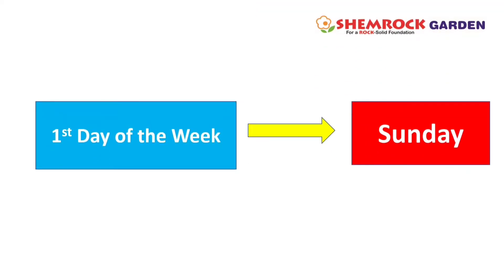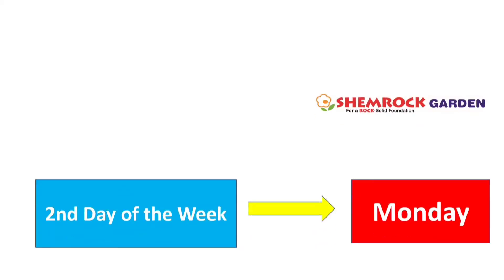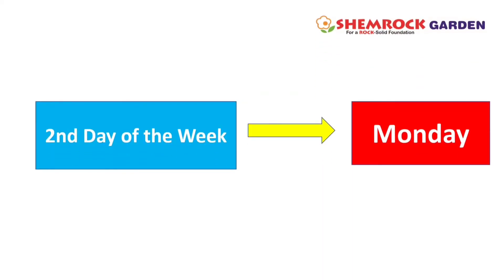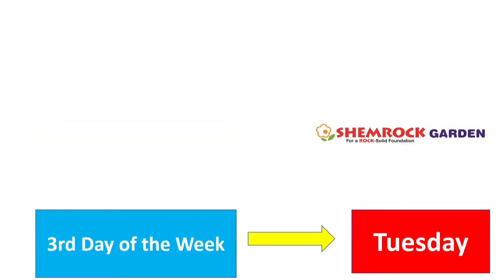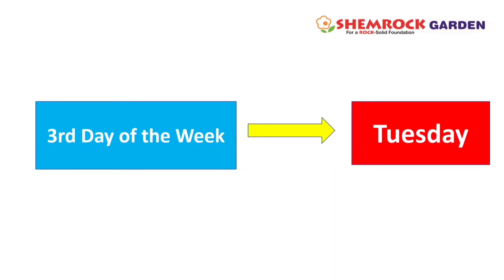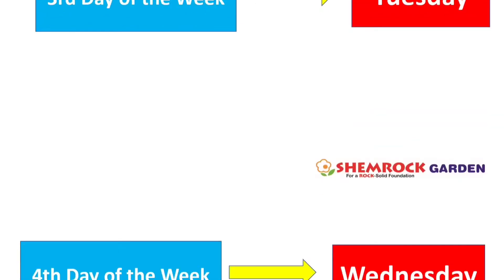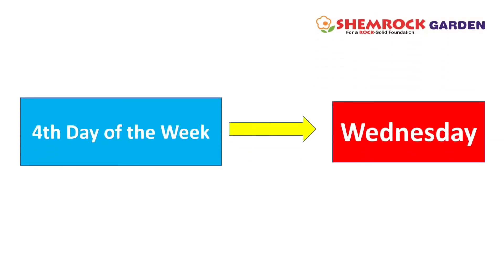First day of the week is Sunday. Second day of the week is Monday. Third day of the week is Tuesday. Fourth day of the week is Wednesday.